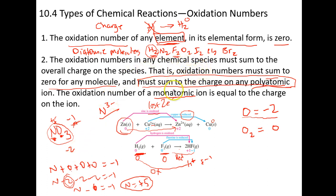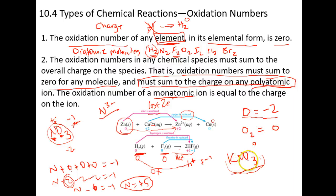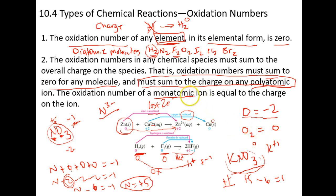For any neutral molecule, oxidation numbers must sum to zero. Take potassium nitrate: the overall charge is zero. Each oxygen is minus two giving minus six total, nitrogen is plus five, so potassium must be plus one. You could also just look at the periodic table and already know potassium is plus one.